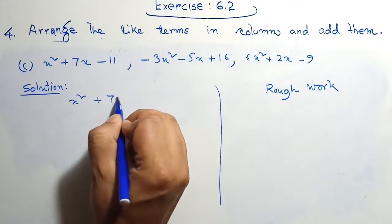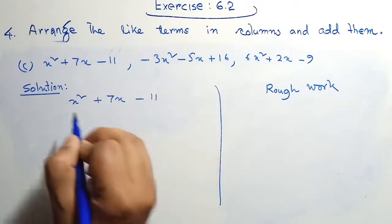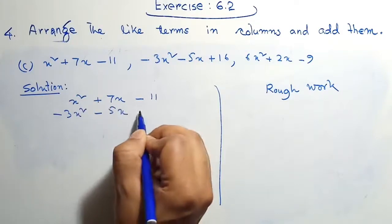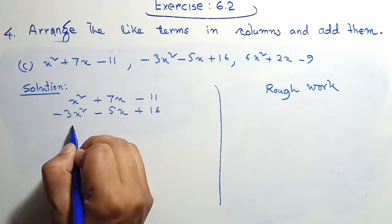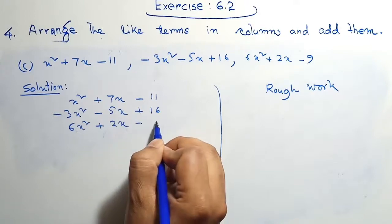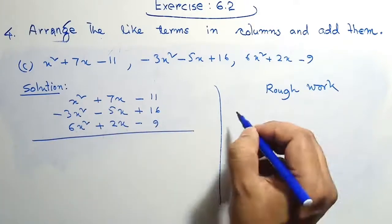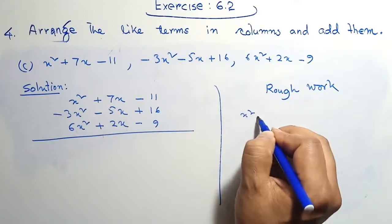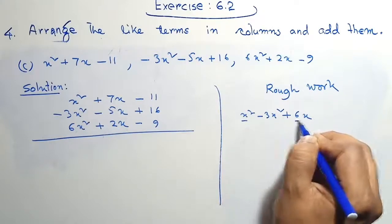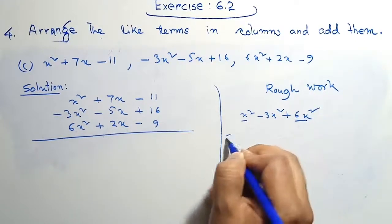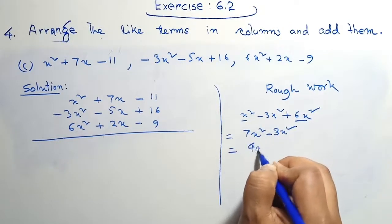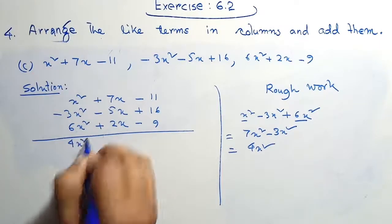Question C: x² plus 7x minus 11b² minus 3x² minus 5x plus 16b², again 6x² plus 2x minus 9b². Here the value of x² equals x² minus 3x² plus 6x². 6x² equals 7x² minus 3x². Therefore the value will be plus 4x².